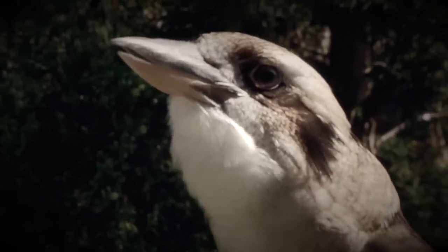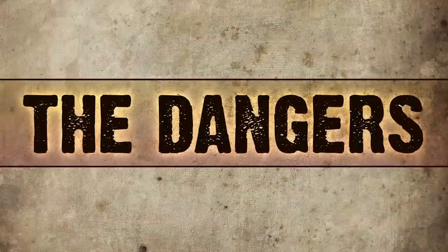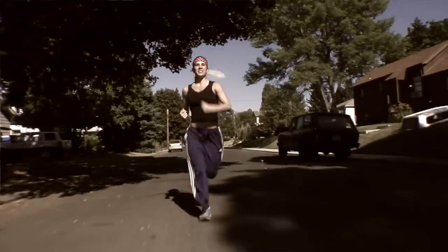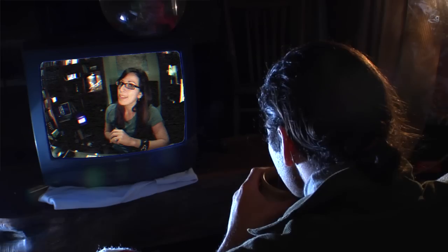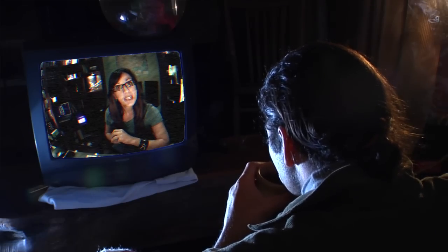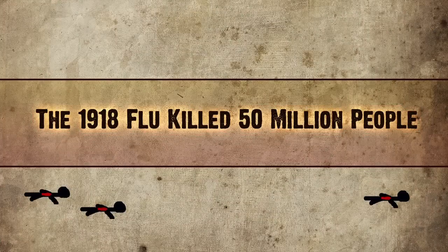The flu virus — and I'm talking all influenza viruses — originally come from birds. If you're really healthy, you have a good immune system, and you get the flu, you're going to pull through. But every once in a while there's a flu strain that is not like the others, like the 1918 flu epidemic, which killed 50 million people. And oddly, the people with the strongest immune systems were the most vulnerable in that case.